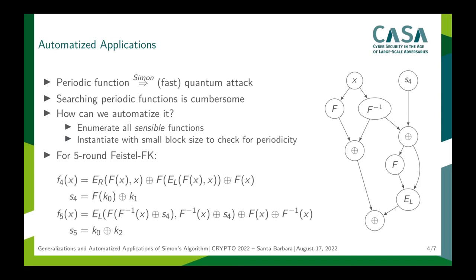The idea is rather simple. We enumerate all sensible candidate functions and then instantiate them with a small block size to check whether there is a period. By sensible, we mean functions that can be represented as circuits that make use of, for example, XOR, the encryption, or internal round functions of the construction. One such circuit is depicted on the right side of the slide.